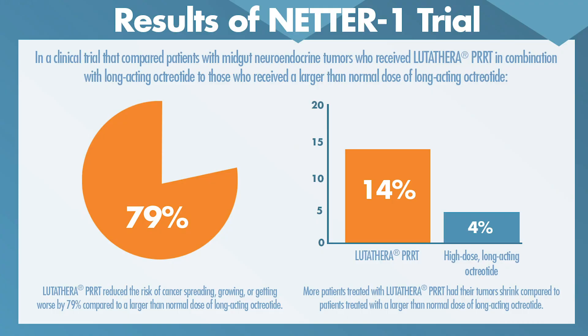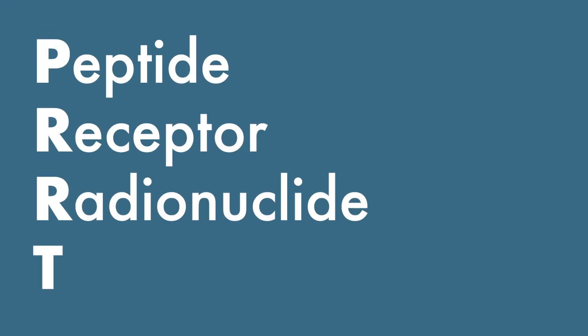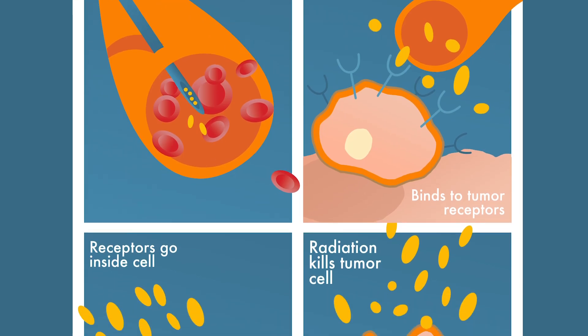Other pivotal trials include the Sunitinib trial for pancreatic neuroendocrine tumors, the Telotristat trial in carcinoid syndrome diarrhea, and most recently the NETTER-1 or Lutathera trial — PRRT, peptide receptor radiotherapy — in the management of gastroenteropancreatic neuroendocrine tumors (GEPNETs). PRRT therapy is a fantastic new modality used to treat people with lower-grade neuroendocrine tumors, and it's been proven to be very effective through clinical trials.